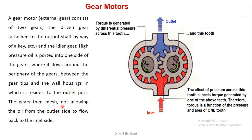The oil flows to the output port. The gear then meshes, not allowing oil from the output shaft to flow back to the inlet port. This is a simple diagram for gear motors — it consists of a casing with two gears, one is the driver and the other is the driven.